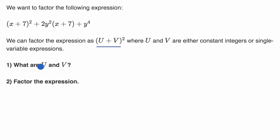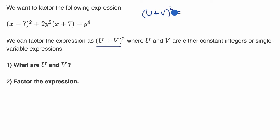Let's go with the first part. They say we can factor the expression as u plus v squared. One way is to remind ourselves what u plus v squared even is. U plus v squared is just the square of a binomial — we've seen this in many other videos. This is going to be u squared plus two times the product of these two terms, two uv, plus v squared.